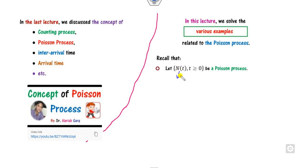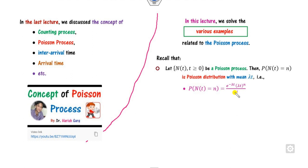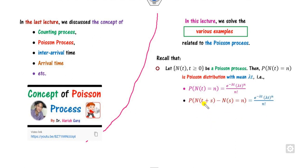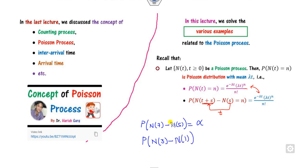If N(t), the counting process, is a Poisson process, then the probability follows the Poisson distribution with mean rate lambda*t. Note that N(t) - N(0) represents the count, since N(0) = 0. The key property is stationary increments: if the difference in time is the same, the probability is the same. For example, P(N(7) - N(5)) = alpha implies P(N(3) - N(1)) = alpha, since both differences equal 2.